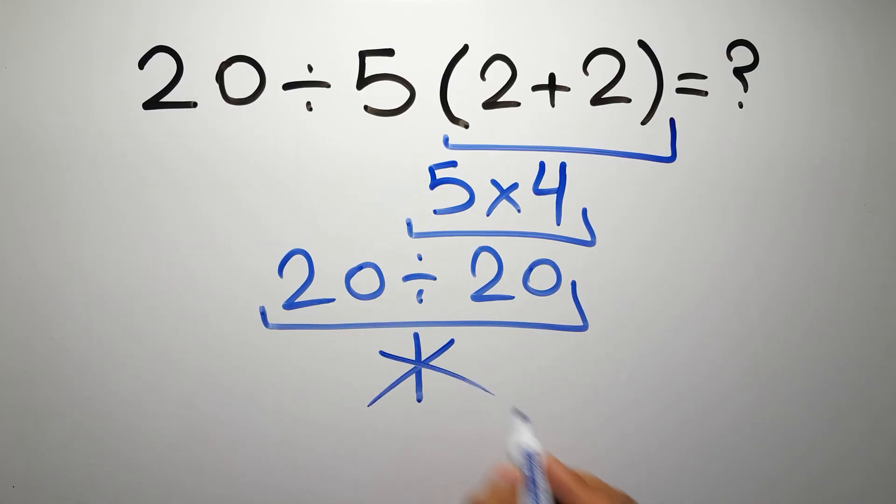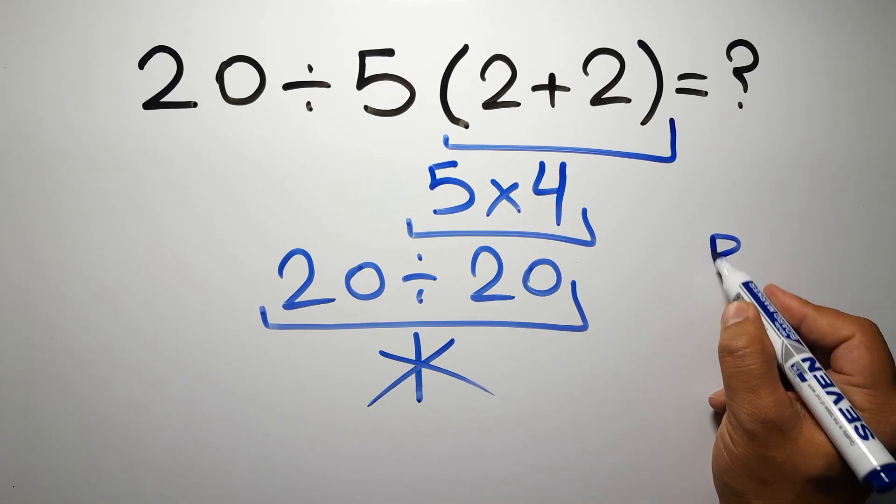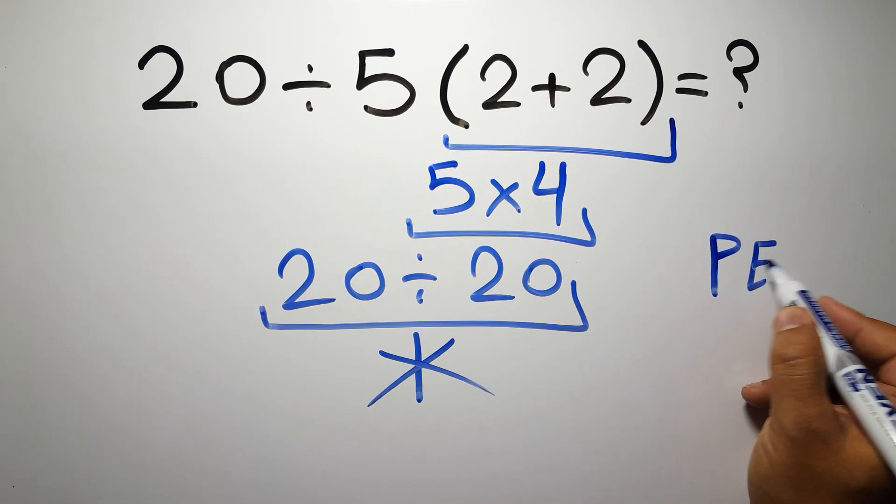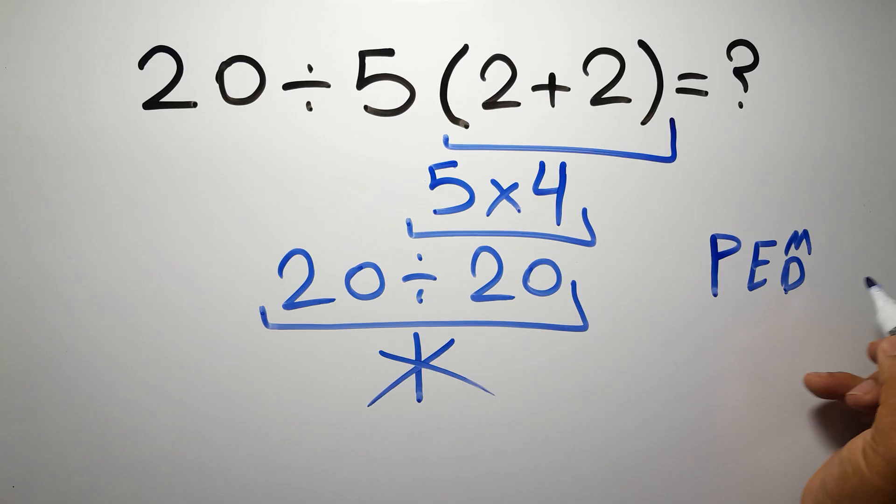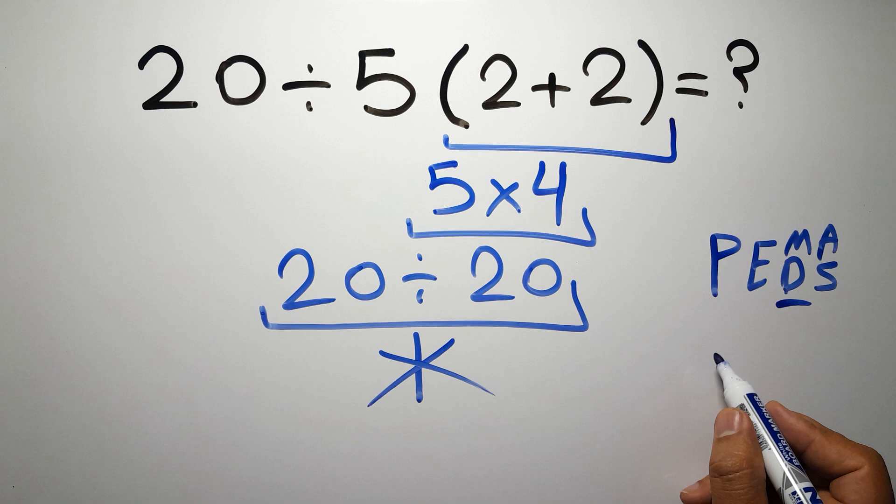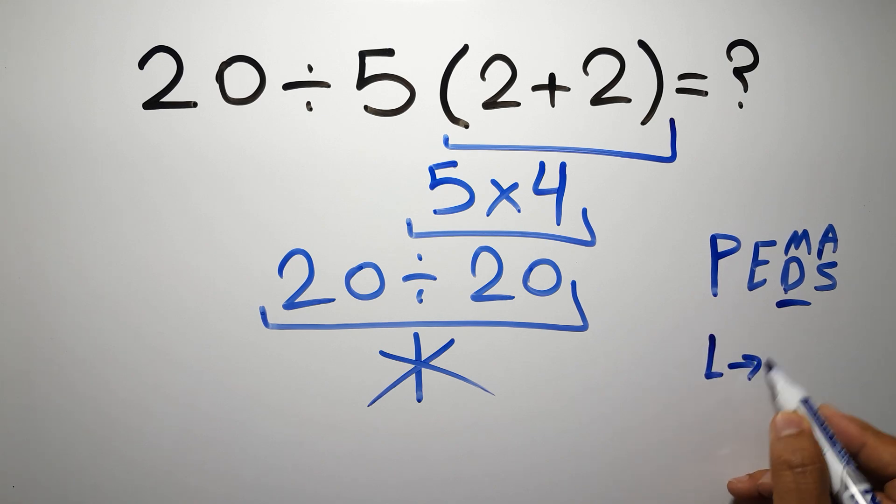But this answer is not correct, because according to the order of operations, first we have to do parentheses, then exponents, then multiplication or division, and finally addition or subtraction. Remember that multiplication and division have equal priority, and we have to work from left to right, and the same applies to addition and subtraction.